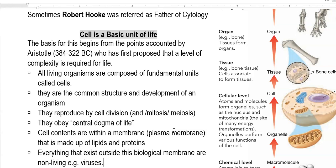Vegetative cells commonly undergo mitosis-based division. However, reproductive cells undertake meiosis-based division. This is common in all living organisms.